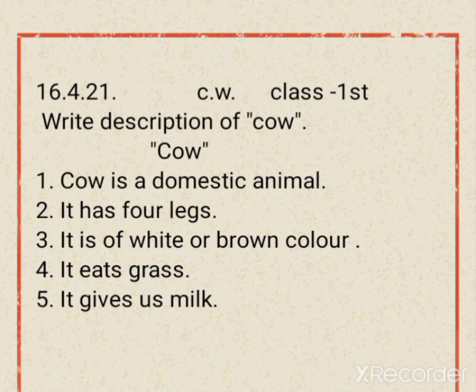Number five: it gives us milk. So, I hope the meaning of all five lines is clear. Let me repeat: cow is a domestic animal. It has four legs. It is of white or brown color. It eats grass. It gives us milk.